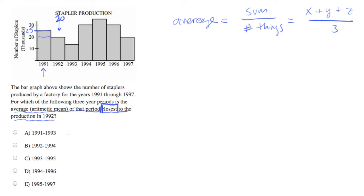Let's do 1991 to 1993. It looks like this is 25 for 1991, 1992 is 20, and 93 is 15. So if you add that up, it's 60. Divide by three, it's approximately 20. That looks pretty good.